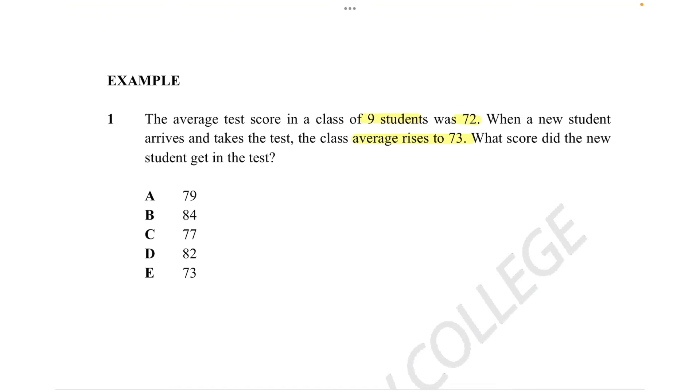So there's 9 students at first, right? 1, 2, 3, 4, 5, 6, 7, 8, 9. And in order to find the total marks of these 9 students, all we need to do is get the average, which is 72, and you times it by 9.